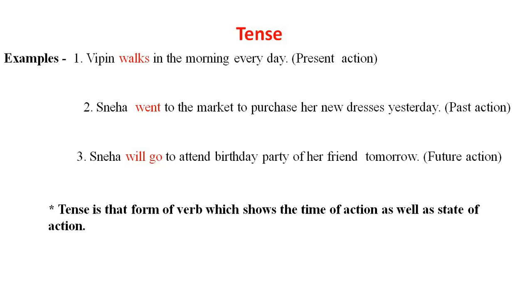Observe these three examples. Your first example is: Vipin walks in the morning every day. Here 'walks' represents a present action — that means Vipin still walks every morning. Your second example is: Sneha went to the market to purchase her new dresses yesterday. Here the word 'went' shows the past action — Sneha had gone to the market and did this work in past time.